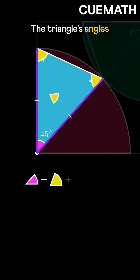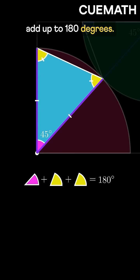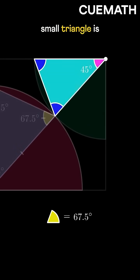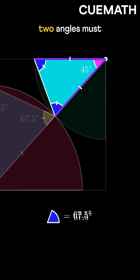The triangle's angles add up to 180 degrees. With one angle being 45, the other two must be 67.5 each. Similarly, this small triangle is isosceles. With one angle being 45, the remaining two angles must be 67.5 each.